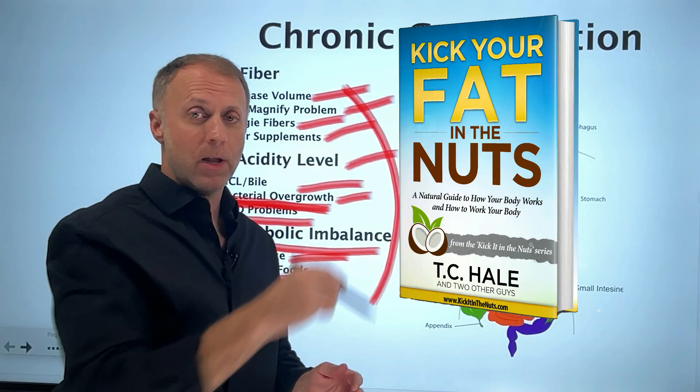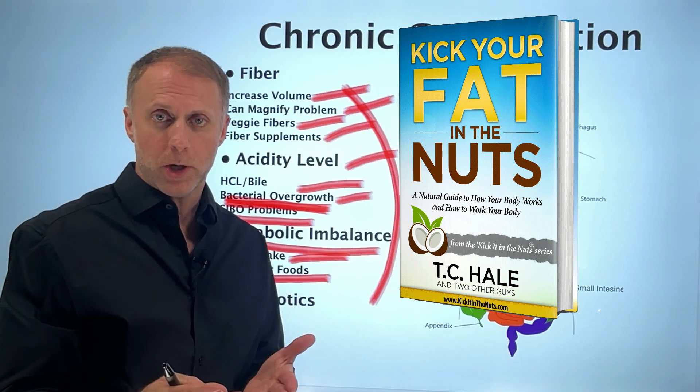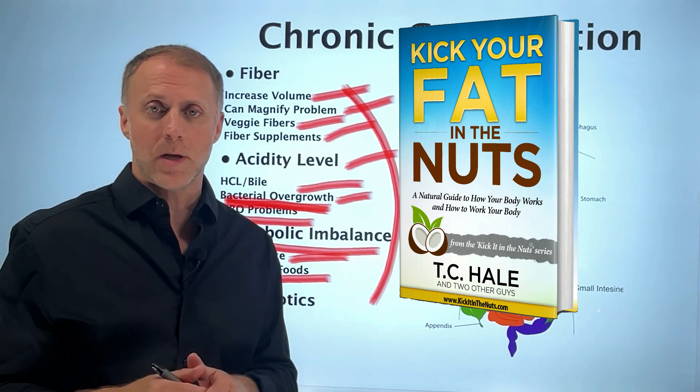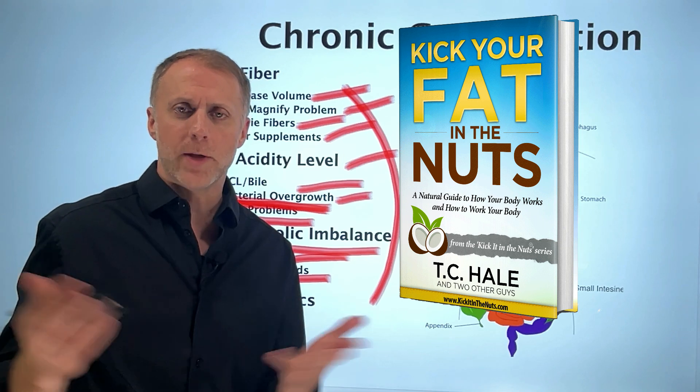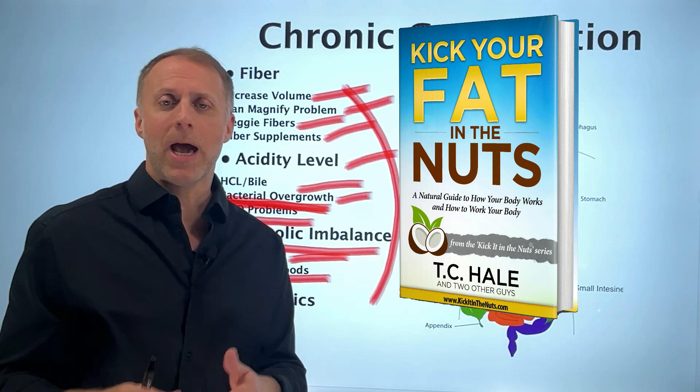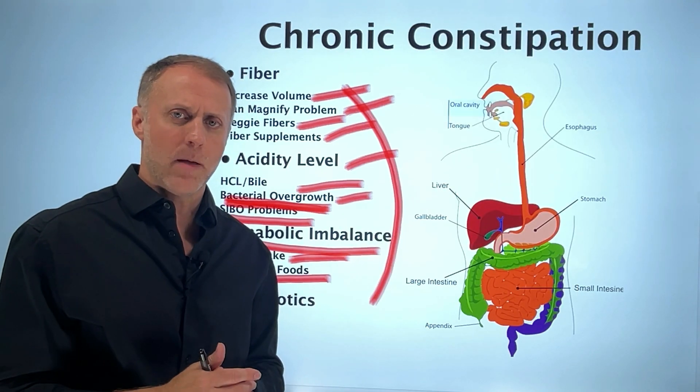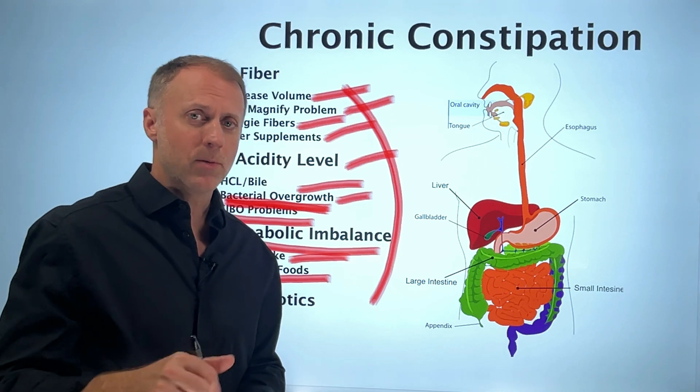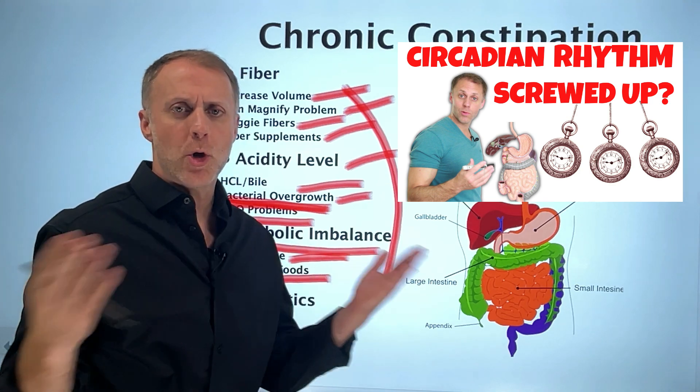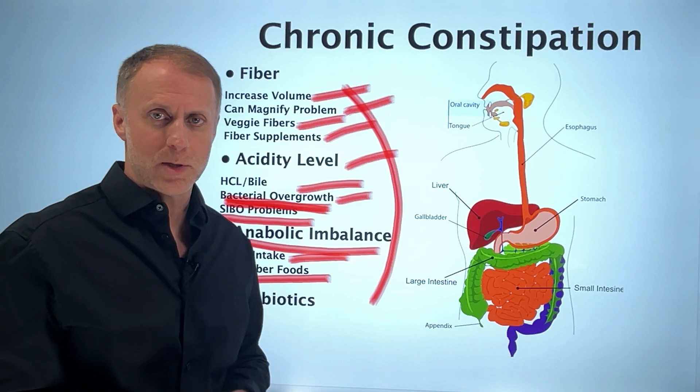So my book, Kick Your Fat in the Nuts, chapters three and four walk you through how to figure out which aspects of digestion are not working correctly and what steps you need to take to help improve those. And the book is available on Amazon, but I'm going to put a link in the description below where you can get the whole thing totally for free. And it also shows you how to run simple tests at home to figure out if you might be leaning too far on that anabolic side. In the description below this video, we'll also put a link to our video on is my circadian rhythm off? And that'll show you how to figure out, am I leaning too far on that anabolic side?